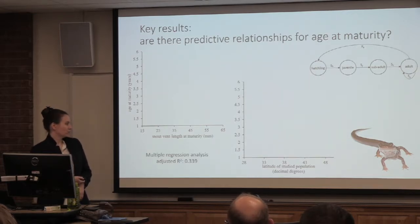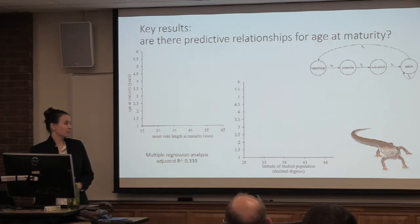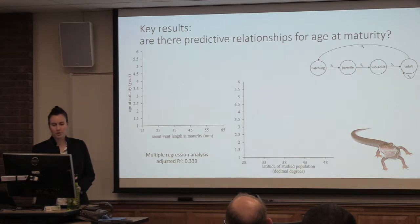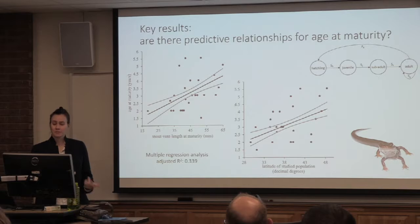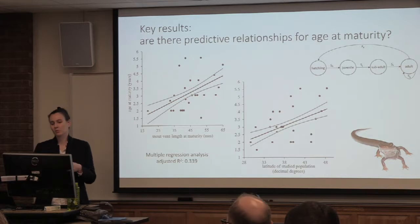We did a multiple regression analysis looking at both of these variables. The adjusted R-squared value is 0.339, which is not bad considering we're just looking at two factors. It looks like there is some relationship with both of these things — you could generally predict what the age of maturity is going to be for your population if you knew the body size at maturity and the latitude of your population, which is relatively easy to find out. So that's kind of cool.